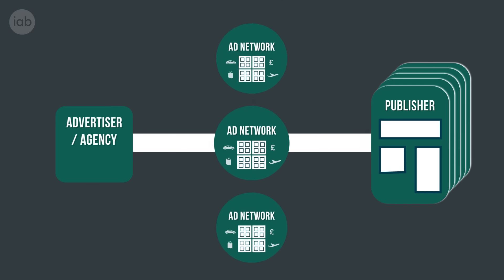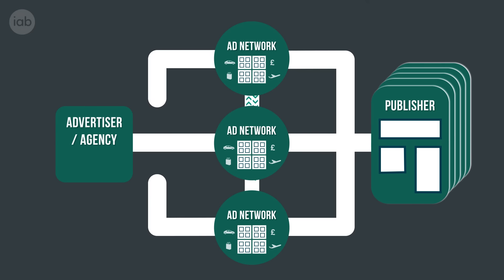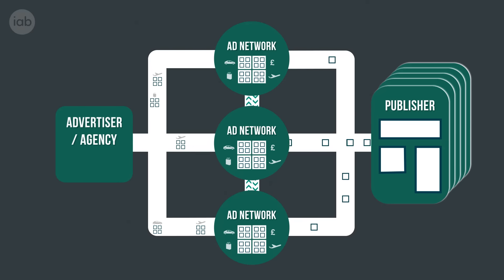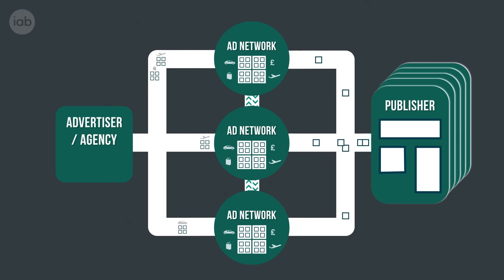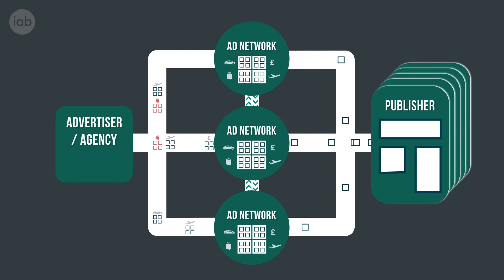Barriers to entry for the Ad Networks were relatively low, and after some time an issue arose. There were hundreds of competing business models trading inventory in different ways. This made it hard for everyone, as they had to deal with lots of different companies looking for the best price to buy and sell their inventory. It also meant that advertisers could be buying the same audience more than once.